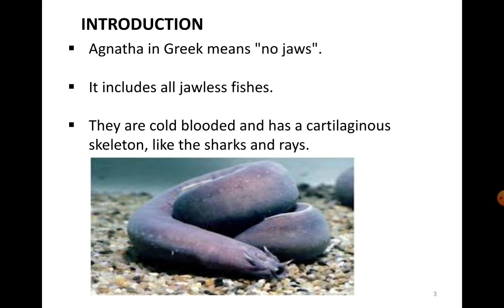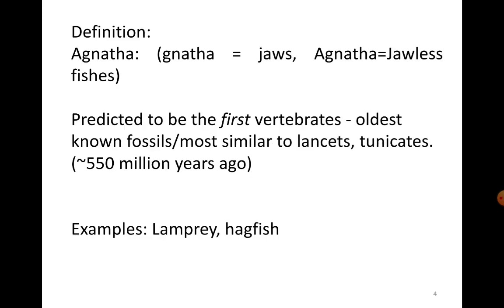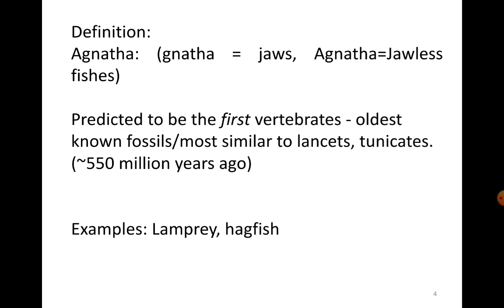Agnatha means having no jaws, so it includes all jawless fishes. They are cold-blooded and they have a cartilaginous skeleton like sharks or rays. Looking at this picture of a hagfish, observe its mouth — it is round and circular, hence they fall under Cyclostomata. These Agnathans are predicted to be the first vertebrates, and the oldest known fossils relate to lancelets or tunicates.